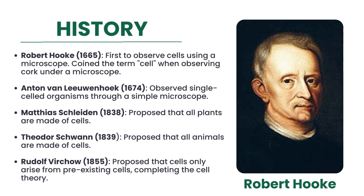Building upon these observations, in 1838, Matthias Schleiden proposed that all plants are comprised of cells. This was followed by Theodor Schwann's 1839 proposition, which extended the idea to animals, suggesting that all animals are also composed of cells. Finally, in 1855, Rudolf Virchow completed the cell theory by proposing that cells only originate from pre-existing cells. These collective contributions revolutionized the field of biology, providing the basis for our understanding of life at its most basic level — the cell.